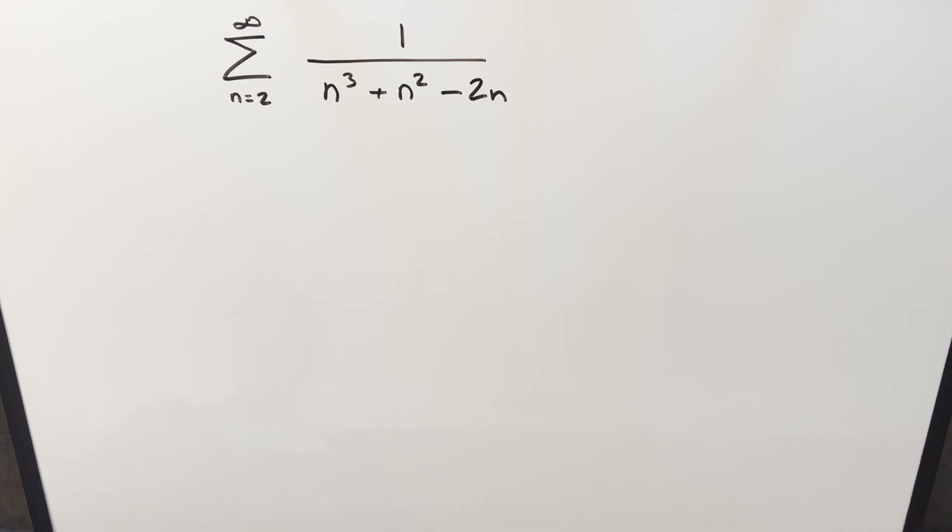Okay, if we have a telescoping series problem, we've got the sum from n equals 2 to infinity of 1 over n cubed plus n squared minus 2n.